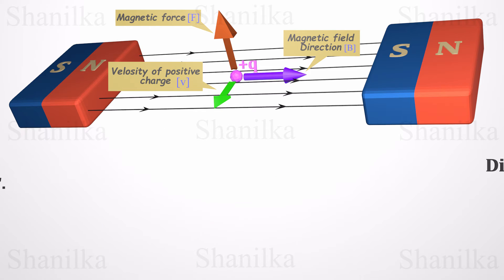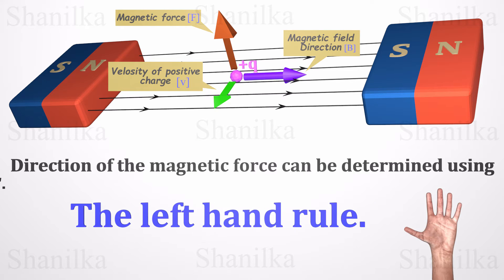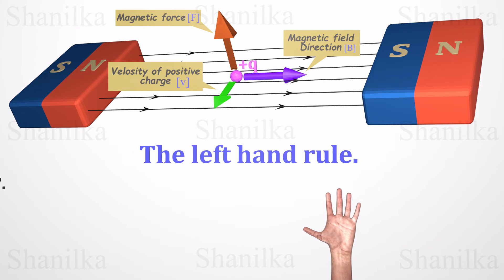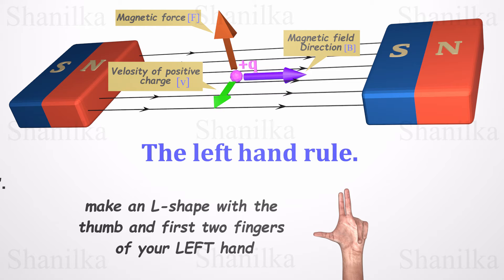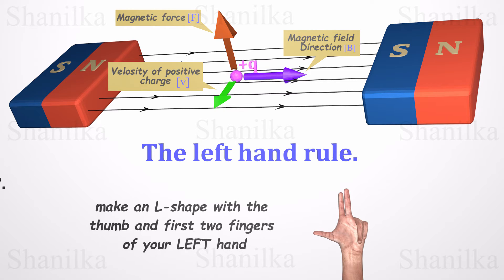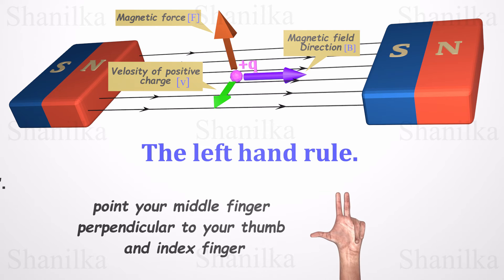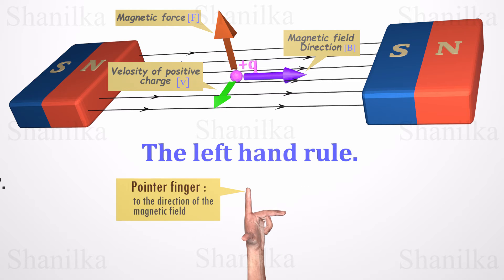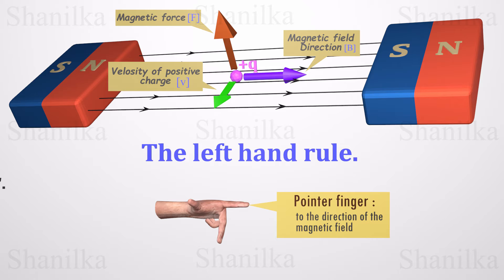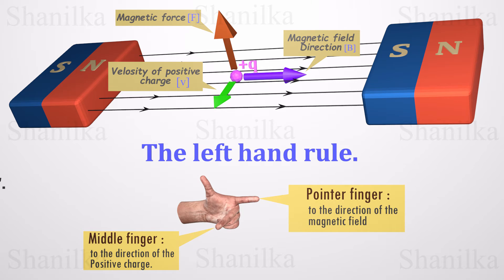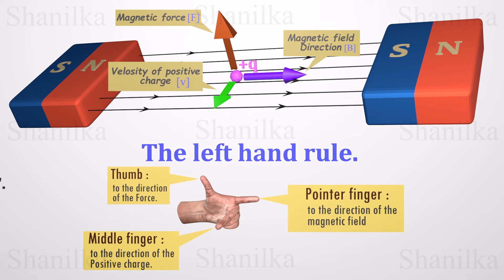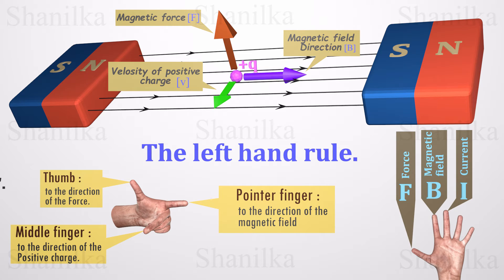We use the left-hand rule to determine the direction of the magnetic force on a positive moving charge. Make an L-shape with your left hand's thumb and first two fingers, then point your middle finger perpendicular to your thumb and index finger. Point your index finger in the direction the positive charge is moving, your middle finger in the direction of the magnetic field, and your thumb points in the direction of the magnetic force. This is called the Lorentz left-hand rule. We can use the mnemonic FBI to remember this: F for force, B for magnetic field, and I for current, which is in the same direction as the positive charge's velocity.